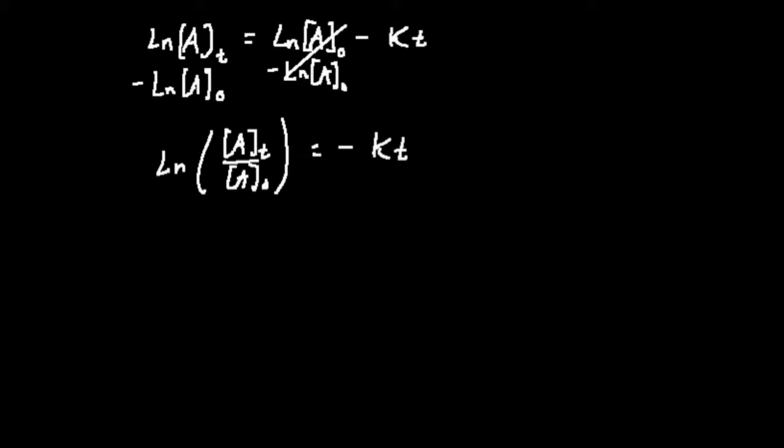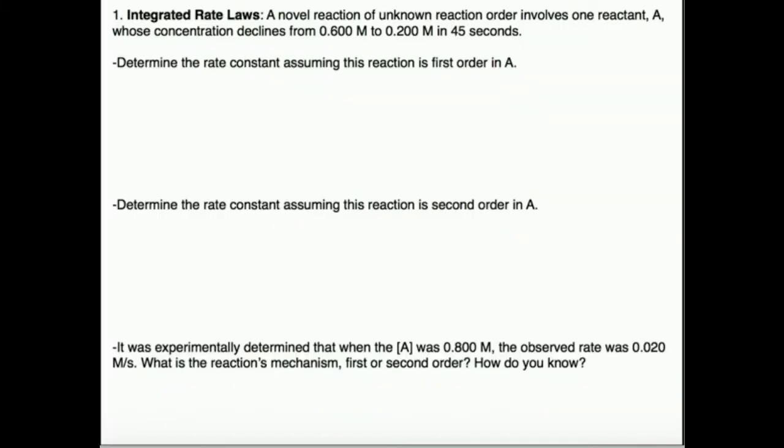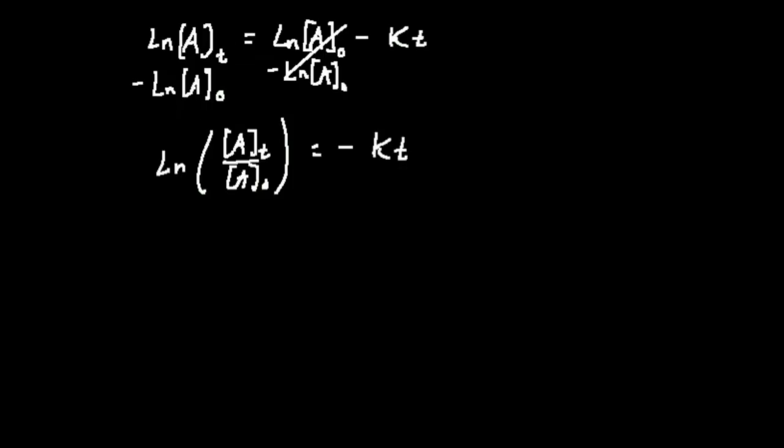So let's go ahead and figure out what At over A not is. Well, A at time t is 0.2. A at time t is the final time, and A not is the initial, so it's going to be 0.2 divided by 0.6, which is one-third, right? Because if we do 0.2 divided by 0.6, it's the same as 2 divided by 6, or one-third. So this is going to be the natural log of one-third is equal to minus kt.